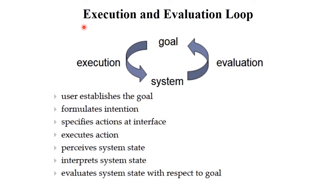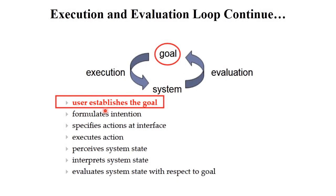This is the structure of Donald Norman's model — the execution and evaluation loop. In the previous video we learned about the structure of the interaction framework. In Donald Norman's model, the structure includes execution, evaluation, the goal, and the system. The seven stages perform on that loop. The first task is to establish the goal — this is your first step.